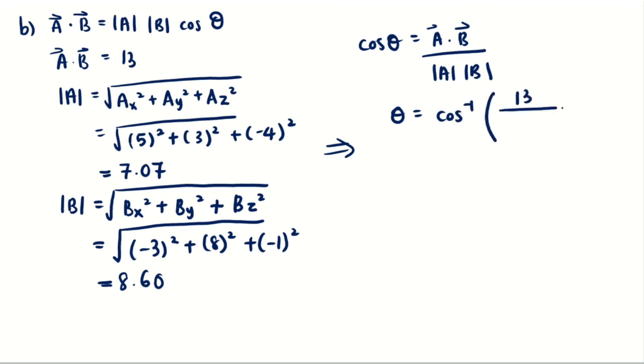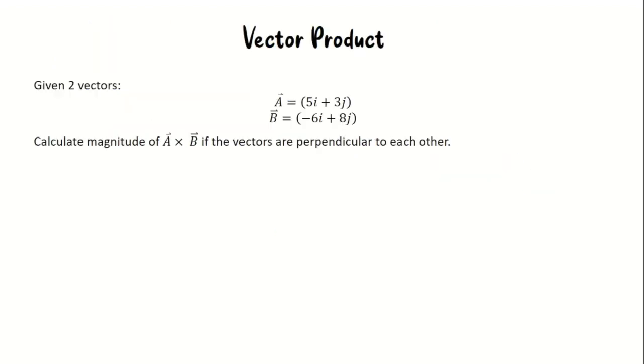The angle can be written as shift cos of 13 over 7.07 times 8.60, and the final answer will be 77.65 degrees. For the last part, we're going to do an example on vector product where we need to calculate the magnitude of vector A cross vector B that are perpendicular to each other.